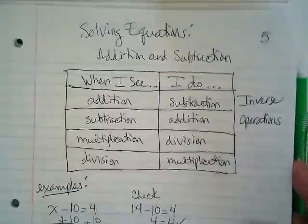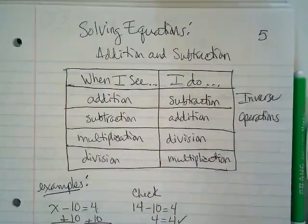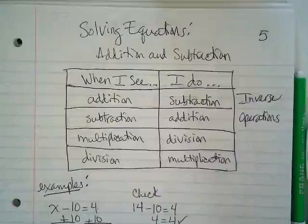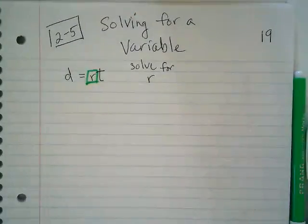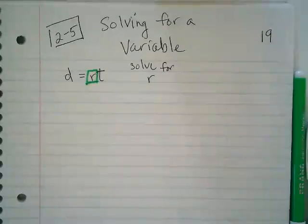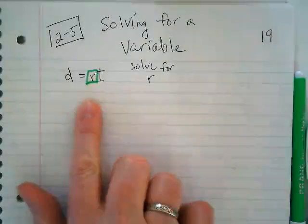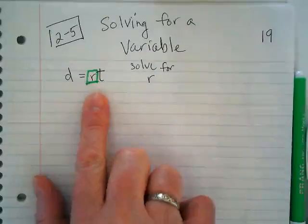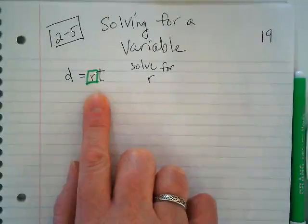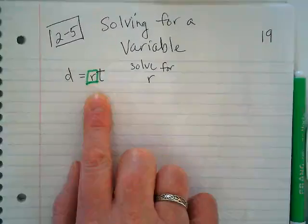I want you guys to think back to page five where we wrote down inverse operations. When we look at this, you want to think about what else is on the side of the equal sign with my target, in this case the R, and what's it doing with it? Well, right now there's a T with it, and it's being multiplied by it. What's the opposite of multiplication?